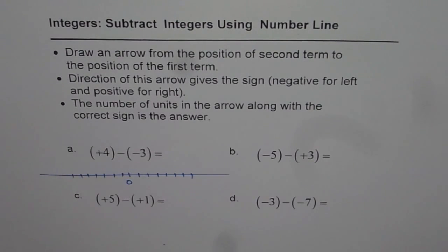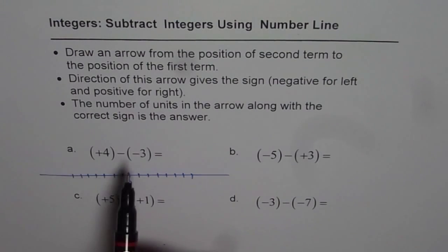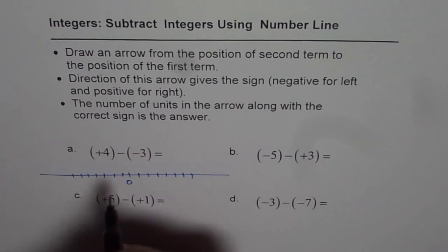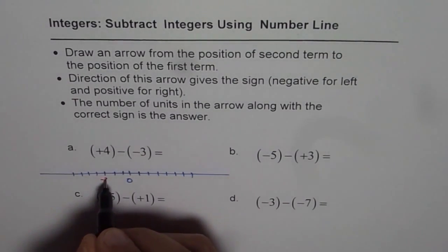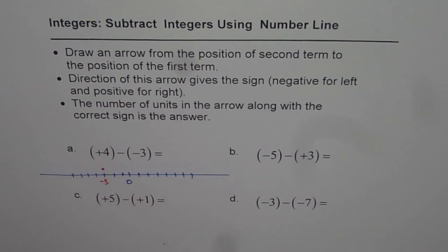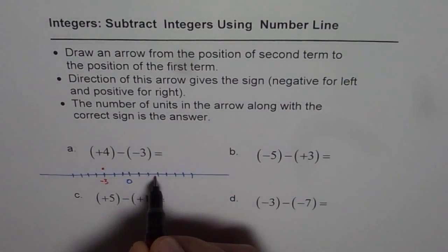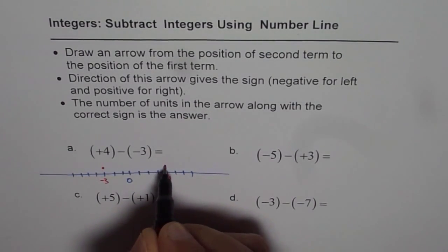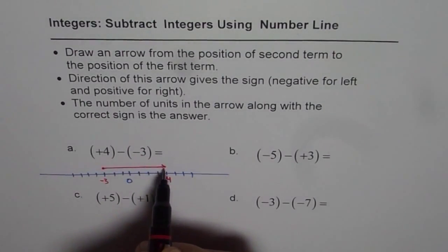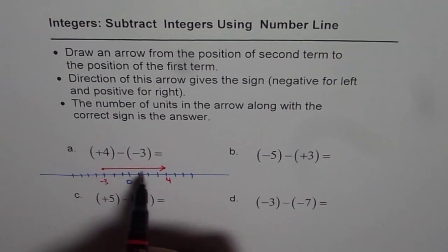Now I will teach you how to subtract integers using a number line. We have to take away minus three from plus four. So start at minus three — that is the starting point. From minus three, we join a line to plus four, which is on the right side of zero. Join the line from minus three to plus four. The direction of this arrow is positive.